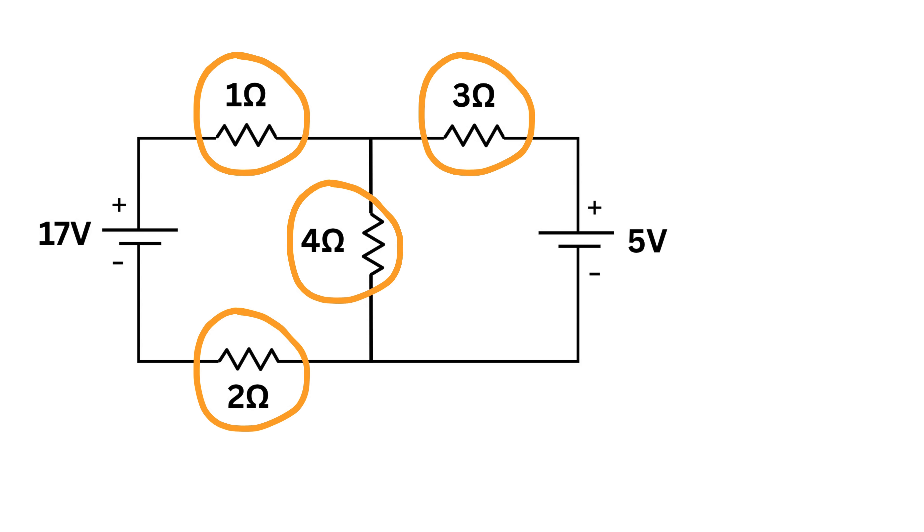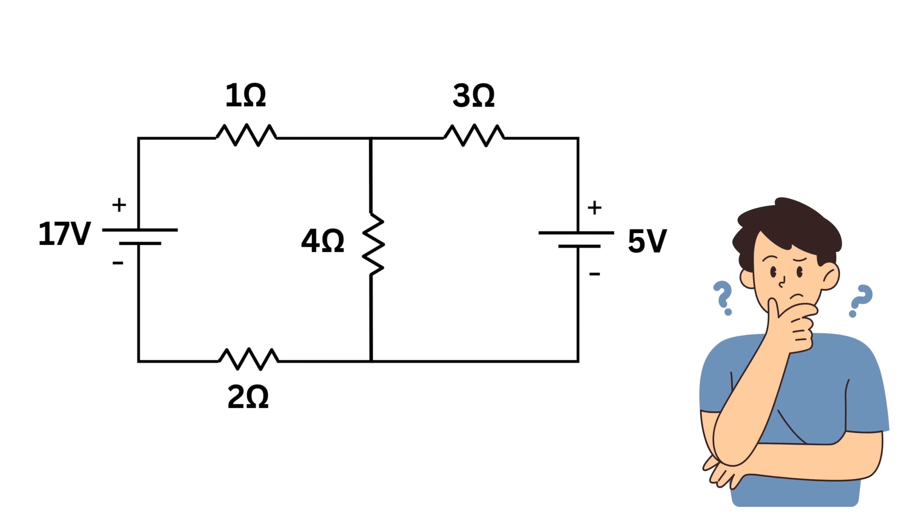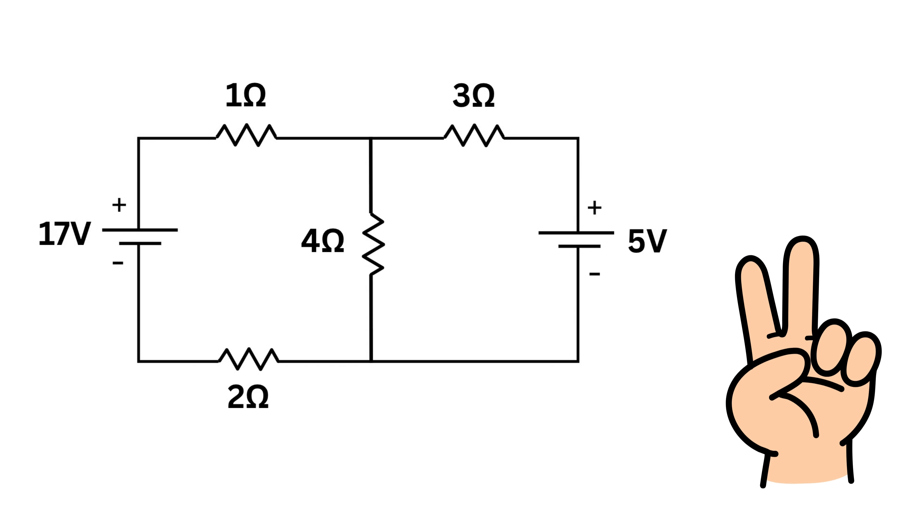Look at this circuit closely. We have multiple resistors, multiple loops and multiple voltage sources. Suppose we want to find the current passing through and voltage drop across each of these resistors. Then what should we do?